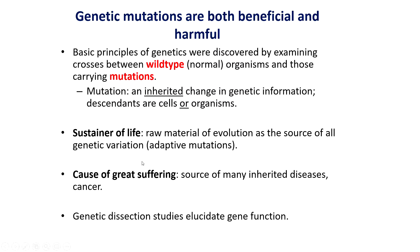Mutations sort of take a normal distribution where the majority — about 80% — are harmless and actually do no damage to the cell whatsoever. Many of us today are carrying these types of mutations where there was a change between us and our parents, but we don't actually see any effect. About 10% of mutations are harmful, meaning they cause a defect in the organism and are the source of many inherited diseases. And the remaining 10% — and I'm sort of making these numbers up to follow a normal distribution — are actually the sustainer of evolution and the source of adaptive mutations for evolving populations.